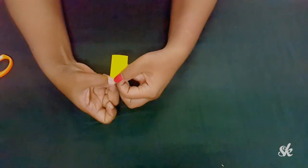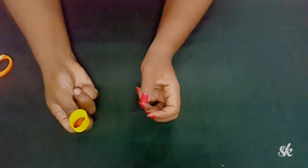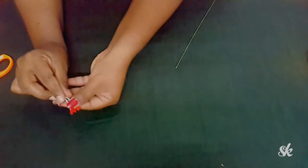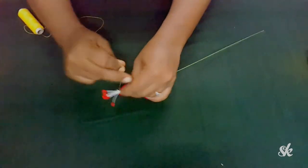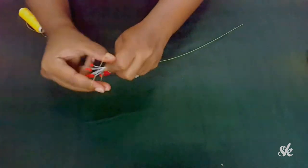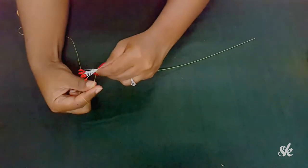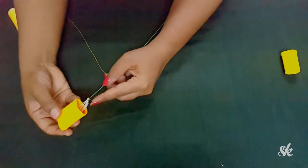Now fold up the stigma and tie it up with the metal wire. Put this inside the rolled petal like this and tie it to the metal wire.